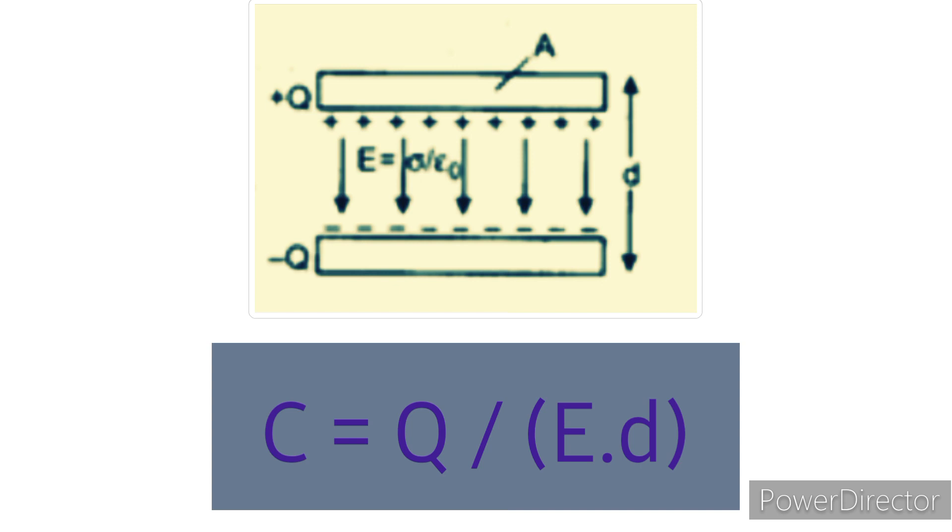Here E is the electric field between the conducting plates. It is of magnitude given by sigma by epsilon naught. So we get C equals Q divided by sigma D divided by epsilon naught.